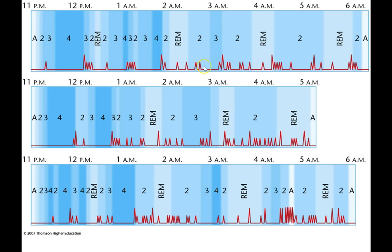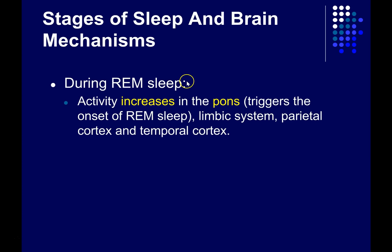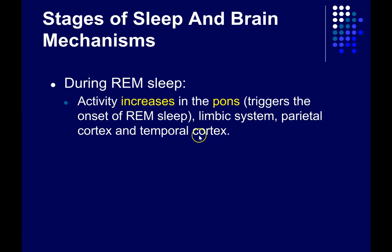During REM sleep, there are changes in activity of the brain measured using PET — positron emission tomography — which is easier for sleep studies because it's virtually silent, unlike functional MRI. It does involve injecting radioactive oxygen. During REM sleep, you see increased activity in parts of the pons — which triggers the onset of REM sleep — and in parts of the limbic system, which is important for emotional states. There's also more activity in parts of the parietal and temporal lobes, important for visual processing and visual imagery, which may reflect the imagery associated with dreaming.